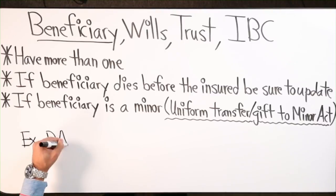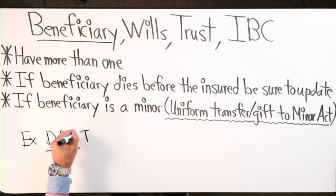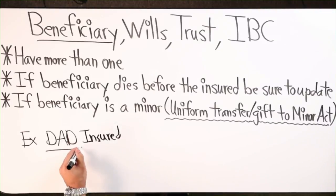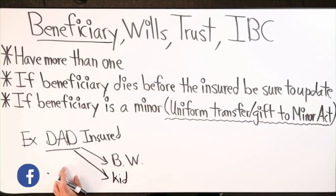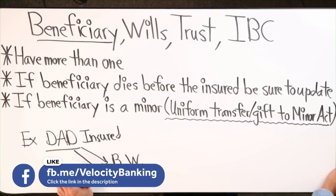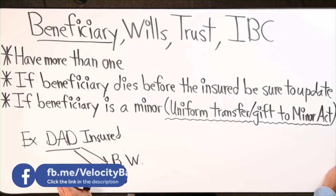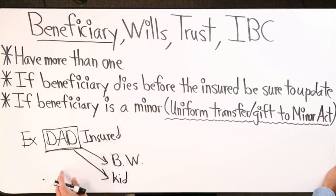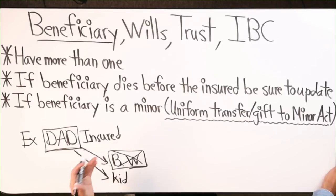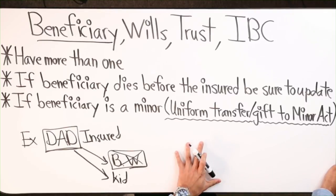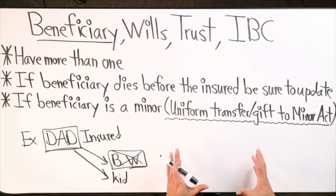For example, let's say dad has a policy — he's the insured — and the beneficiary is his wife. Another beneficiary might be the kid. Well, let's say dad is the insured and wife passes away.